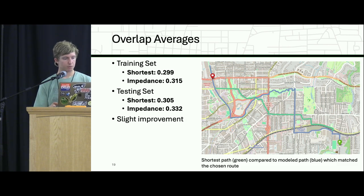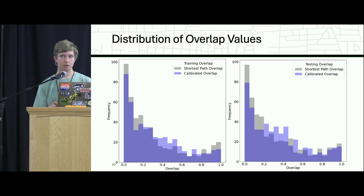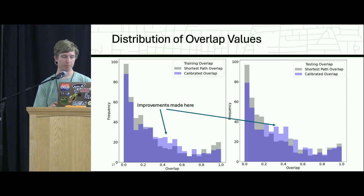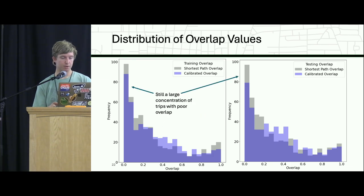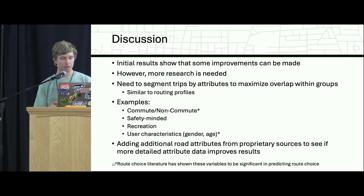Our overlap averages across the board were pretty low — consistent with the study we referenced. For the training set, the shortest path using just travel time gave an overlap of 0.299, and with our impedance function we get a slight bump to 0.315. Similar story for the test set. So we do see a slight improvement, but clearly more work is needed. Looking at the distribution of overlap values — x-axis is overlap, y-axis is frequency — improvements were made overall, but there's a large cluster near zero percent overlap: these are trips not explained by travel time or our impedance function, suggesting we need to apply a different approach to address them.